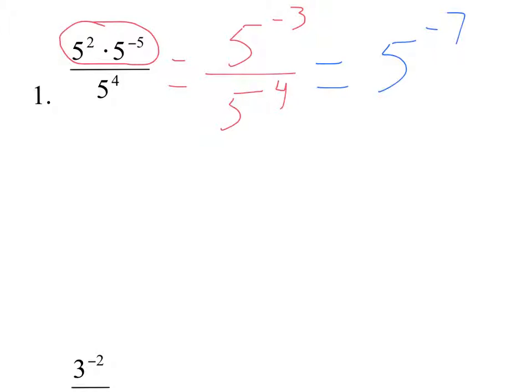And then we learned yesterday we don't ever leave answers with negative exponents. We flip and make positive. So instead of 5 to the negative 7, we're going to say this is 1 over 5 to the positive 7. Final answer.